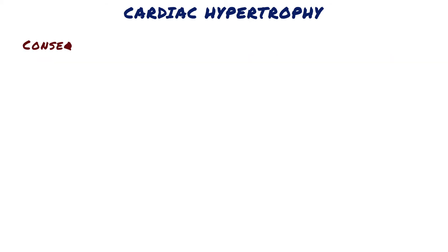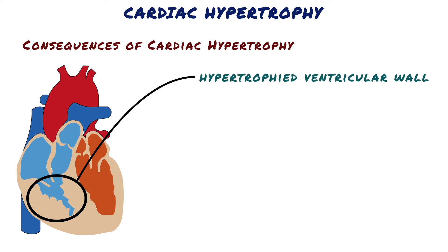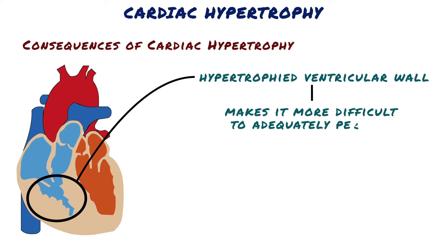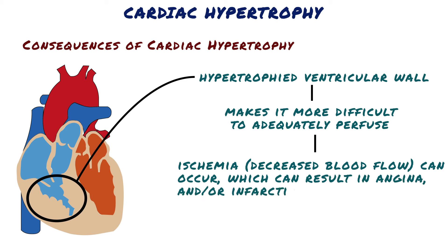Consequences of cardiac hypertrophy: First, the increased thickness of the hypertrophied ventricular wall makes it more difficult to adequately perfuse, as the cardiac muscle outgrows its blood supply. Ischemia — decreased blood flow — can occur, which can result in angina and/or infarction.